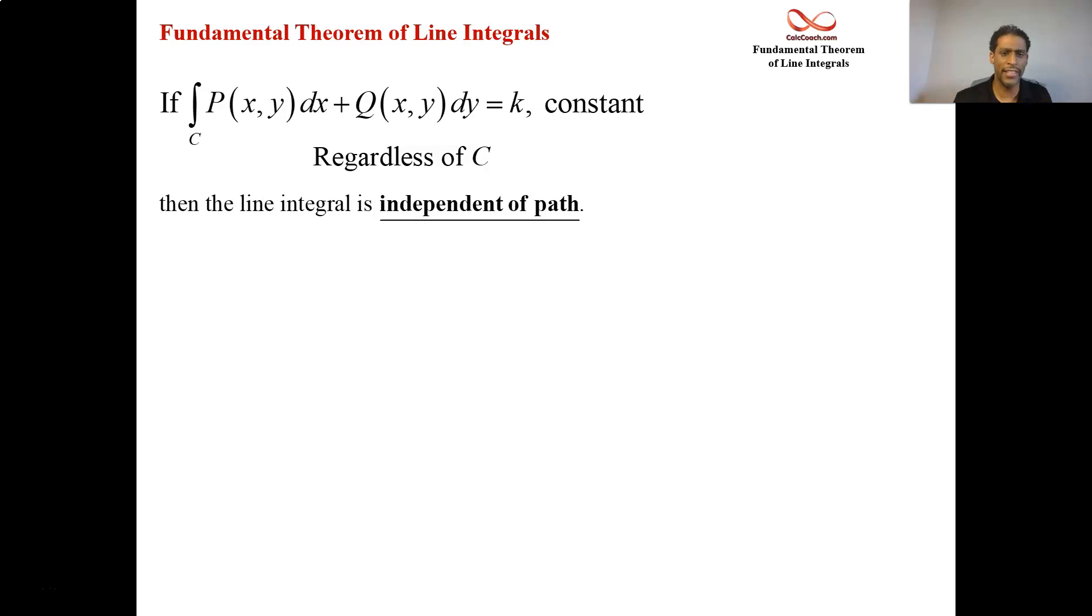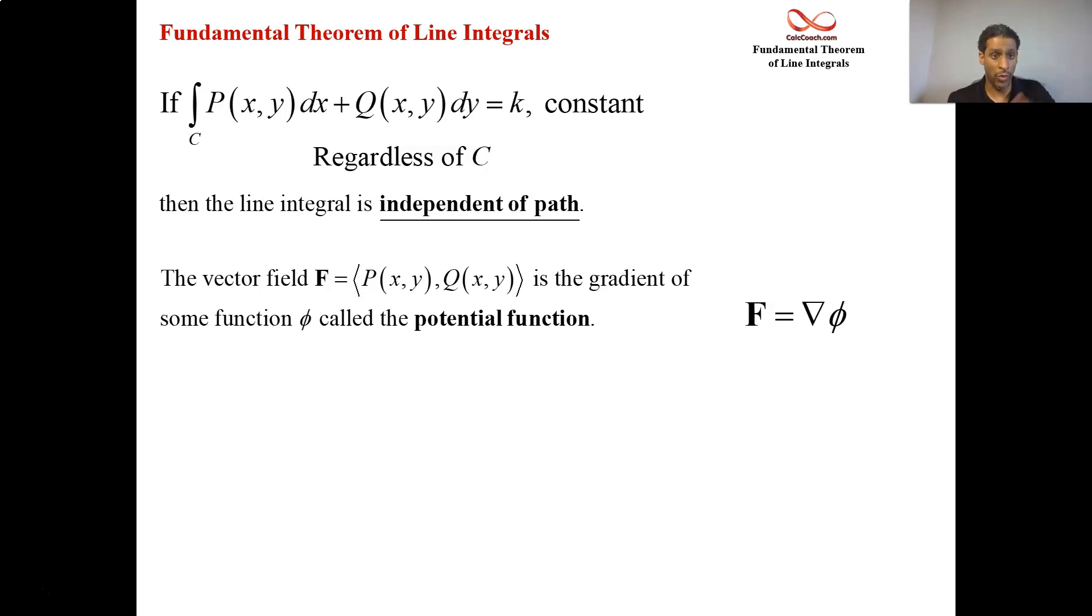There's more that's going on behind the scenes. We use the vocabulary that the vector field is the gradient of some function called a potential function, and we use the Greek letter phi for that. So f is equal to the gradient of phi when this is the case. The differential, the inside of the line integral, is called an exact differential. It's the differential of the phi.